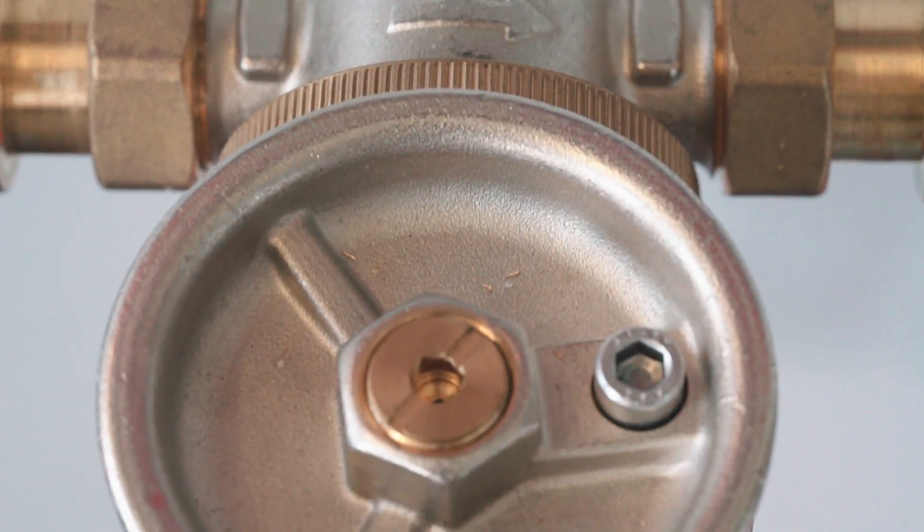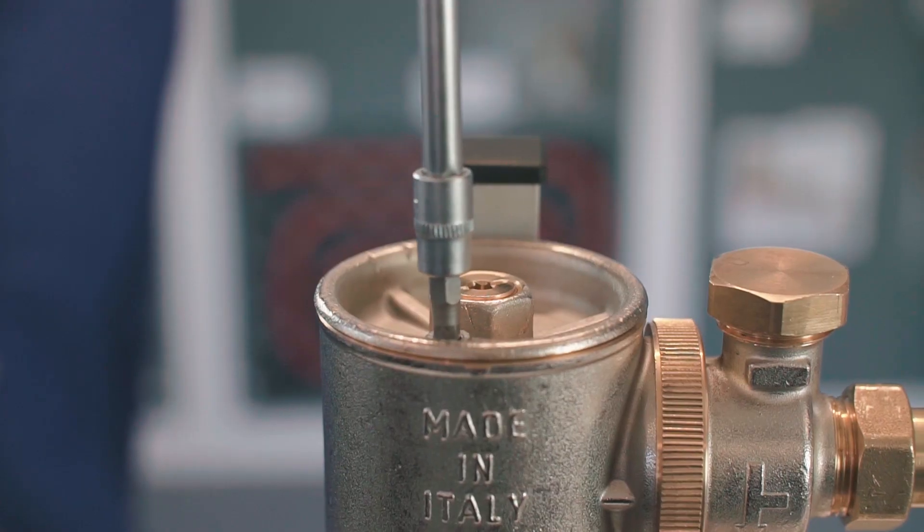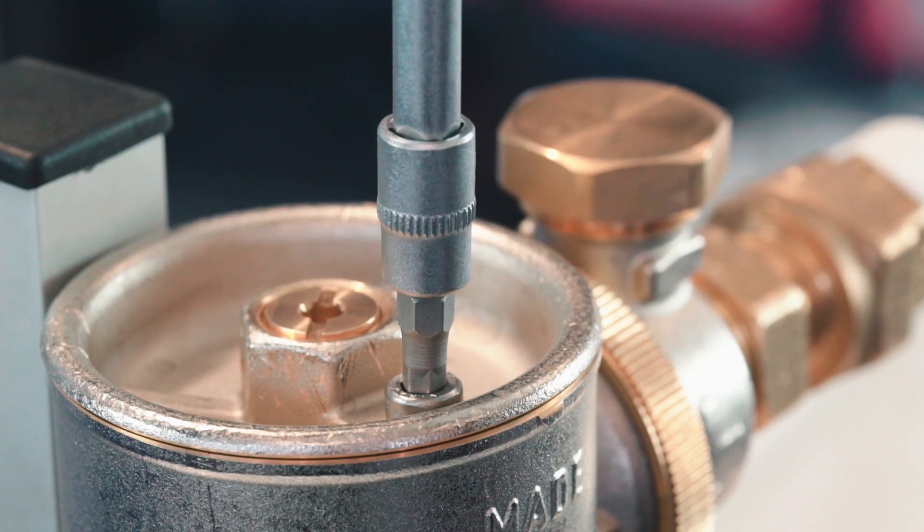The separator is equipped with a screw at the top of the device, which serves as an air vent valve used at the first startup.